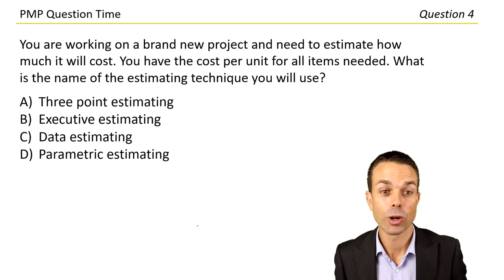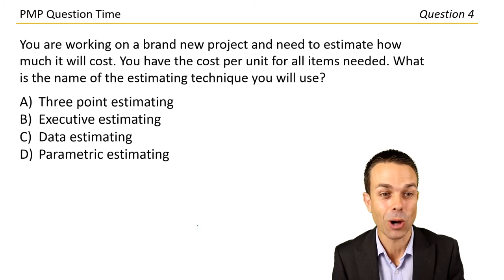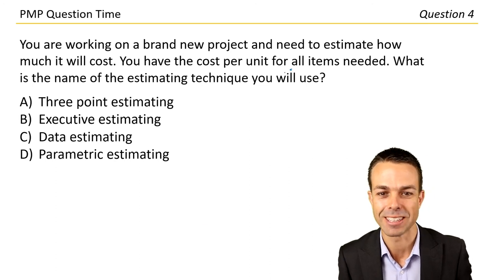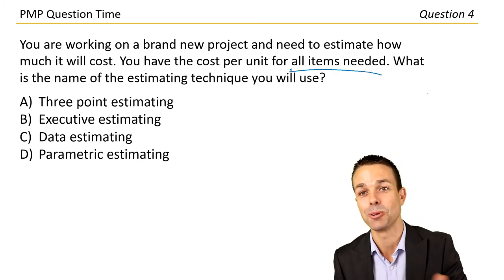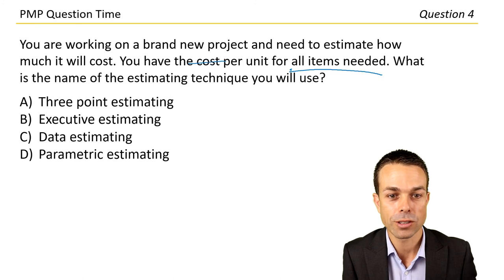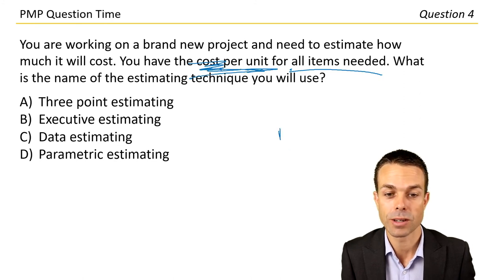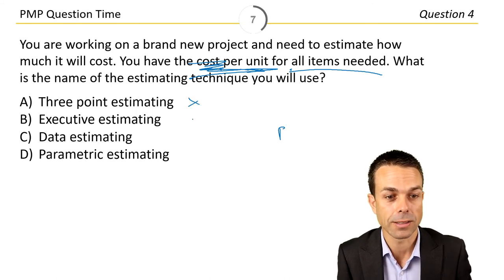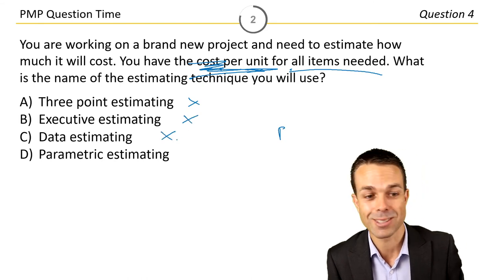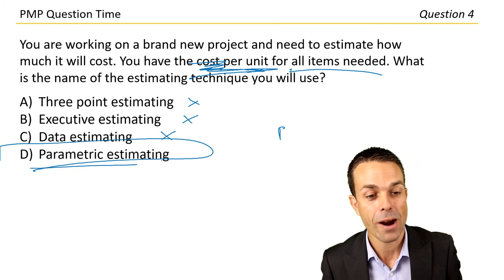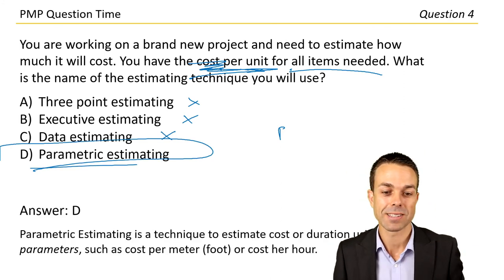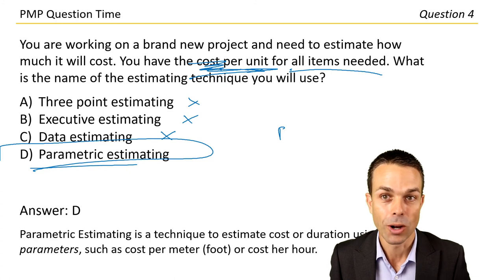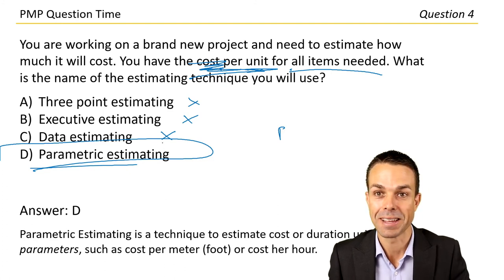Question four. You're working on a brand new project and you need to estimate how much it will cost. You have the cost per unit for all items needed. What is the name of the estimating technique you will use? Cost per unit is a parameter — so we're measuring by a parameter. It's not three-point estimating, not data estimating. Let's go with letter D: parametric estimating. Parametric estimating is a technique to estimate cost or duration using parameters — like $5 per meter or $100 per hour.